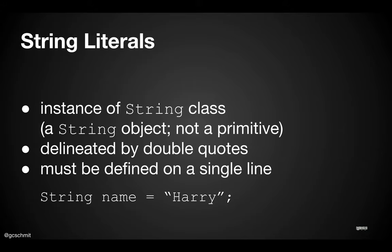A string literal is an actual shortcut way to create a new string object — an instance of the String class. Whatever is in the double quotes, that sequence of characters is what that string will contain. It has to be all on one line, so it looks like this. That's a shortcut way to create a new string, even if that string is an empty string.